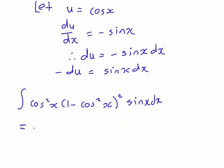Therefore, we can rewrite our expression: cos squared x as u squared, 1 minus cos squared x, that's 1 minus u squared, and that is squared, and the sine x dx is replaced with negative du.